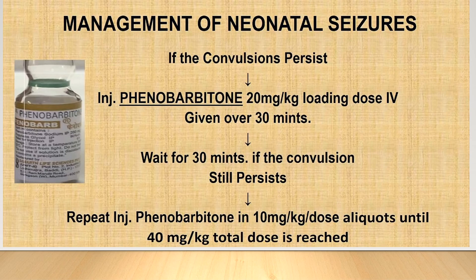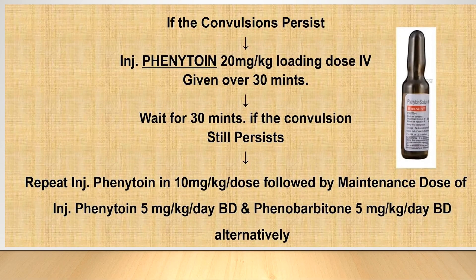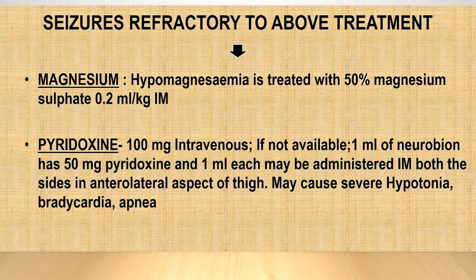Regarding anti-epileptic drugs, the first-line treatment for neonatal seizure is phenobarbitone. Give a loading dose of 20 mg/kg IV over 30 minutes and wait 30 minutes. If convulsion persists, reload with phenobarbitone 10 mg/kg up to a total dose of 40 mg/kg. If the convulsion still persists, add phenytoin to phenobarbitone and wait an additional 30 minutes. If seizure is controlled, continue maintenance phenobarbitone at 5 mg/kg/day. If seizure persists after phenobarbitone, give magnesium sulfate 50% at 0.2 ml/kg if hypomagnesemia is present.